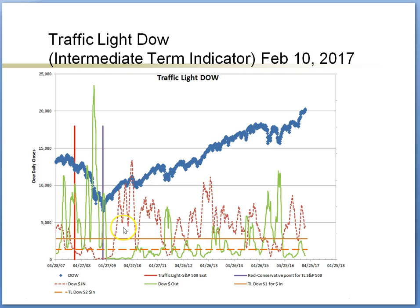Let's talk about divergence. This happens when the index and the red line go in opposite directions, as shown in the 2011 events and also recent events in the 2016 correction. As the index goes up, the red line does not, and the green line creeps up. That forms a divergence because the index cannot continue to go up unless money flows in. I will show you in detail in the zooming slide how we can use that information.